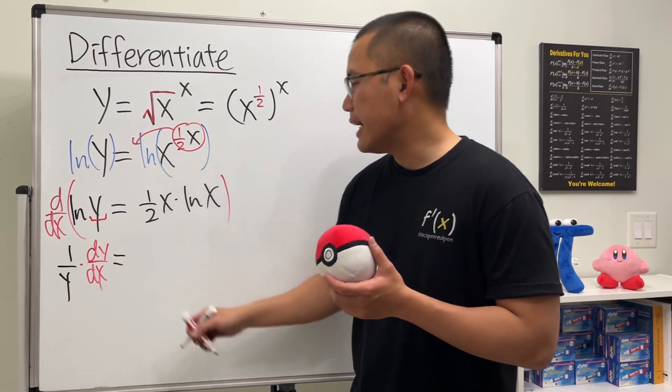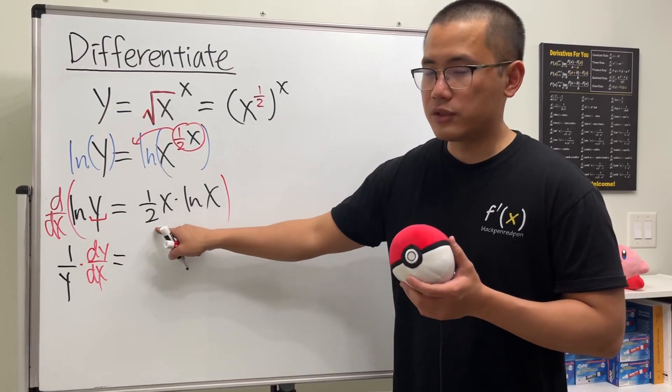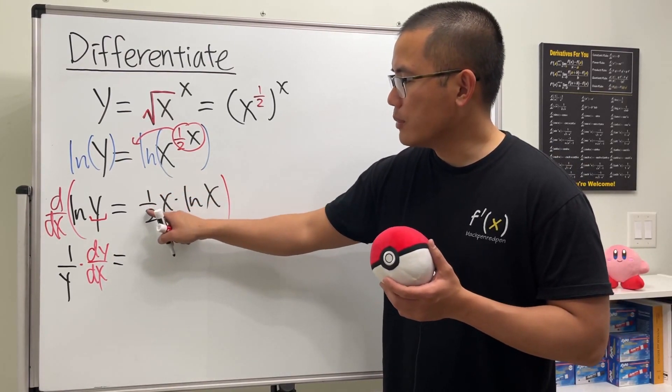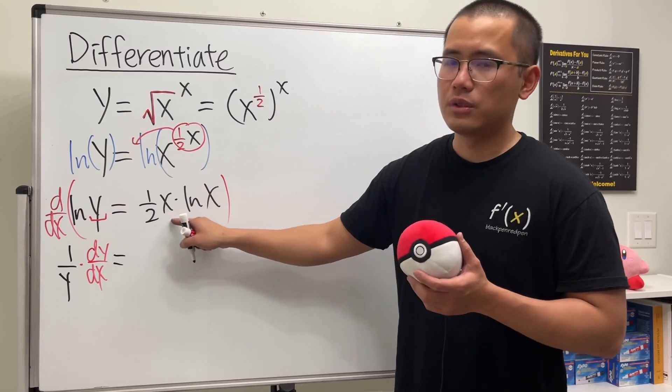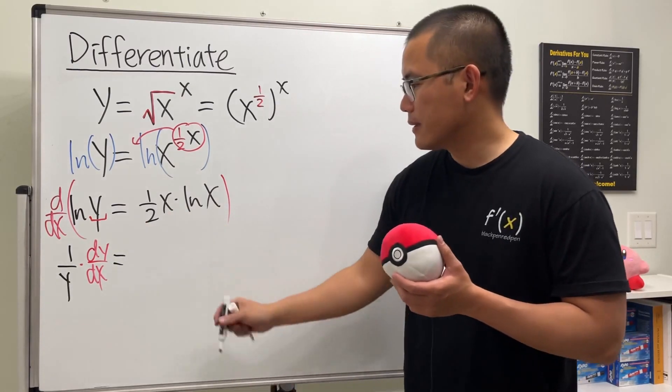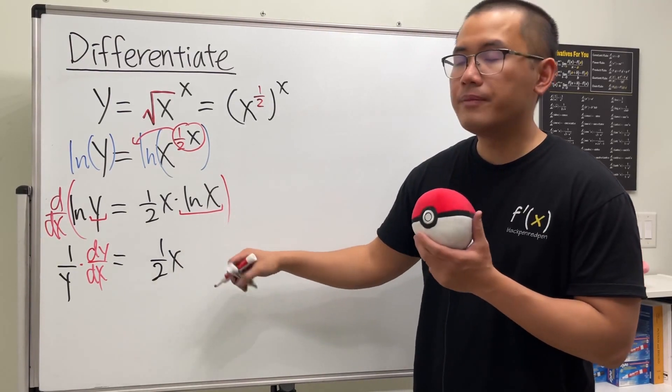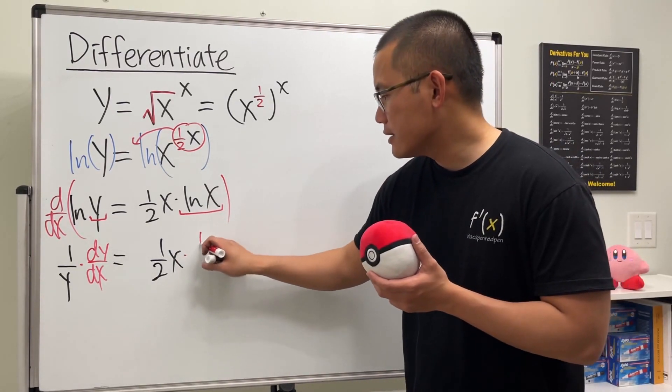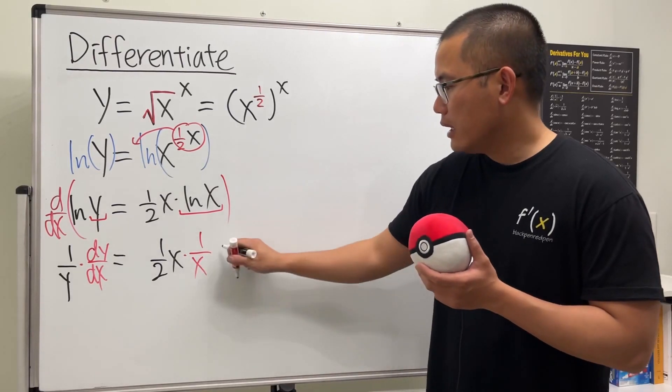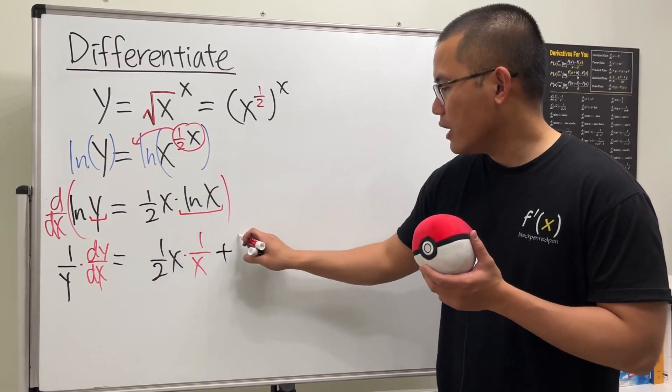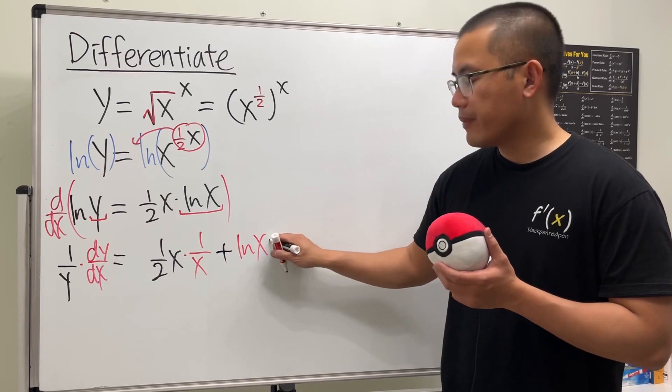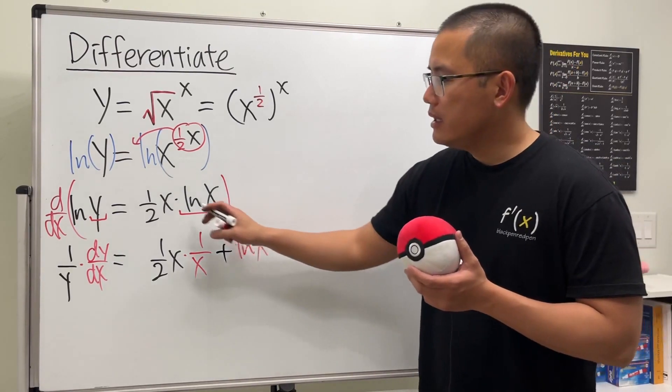On the right hand side, let's take this as the first function. When you have a constant multiple, just put it together with the function part. So one half x, let me put that down. We multiply by the derivative of the second. The derivative of ln x is one over x.